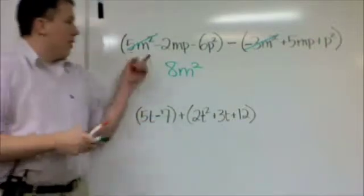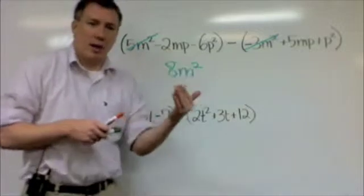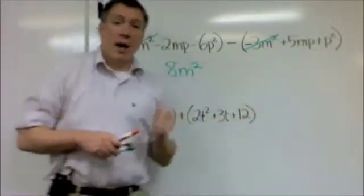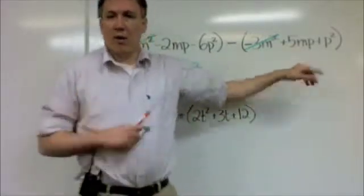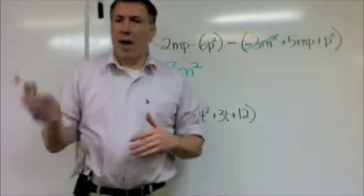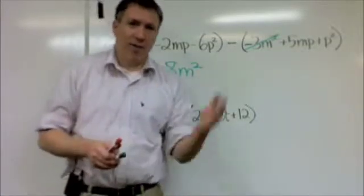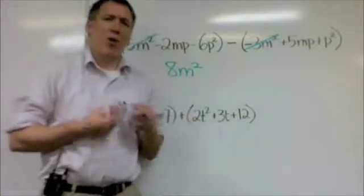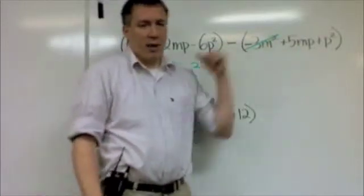Okay, moving on. Minus 2mp. Minus 2mp. So m has the power of 1. P has the power of 1. It's minus 2. So look down here. Oh, there's another mp. Now, if this had said pm, it reversed the letters, that would be okay because multiplication doesn't matter the order. m times p and p times m or 2 times 5 and 5 times 2, those are the same. So it doesn't matter if the order changes, the powers have to be the same.